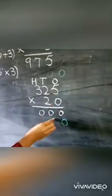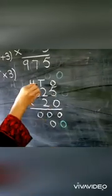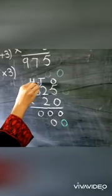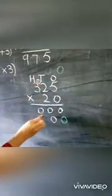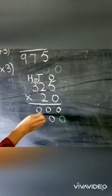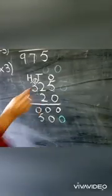2 times 5 is 10. 1 carries to 10s place. 2 times 2 is 4 plus 1, which is 5. 2 multiplied by 3 is 6.